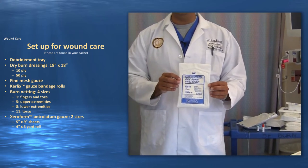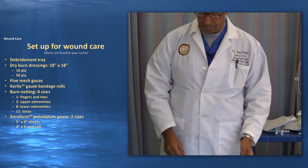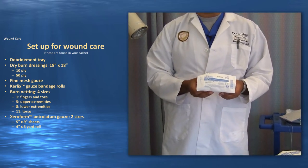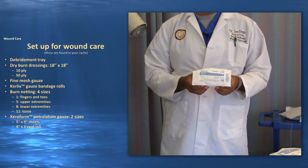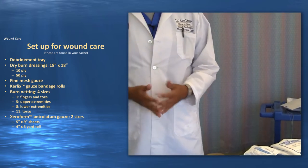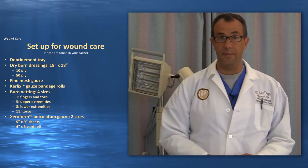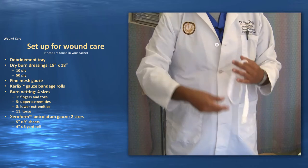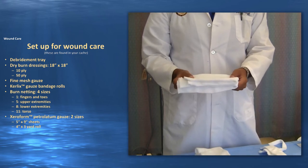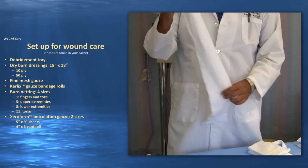Next we have fine mesh gauze, which will probably be used more after debridement if your burn patient stays with you. Then Curlex — you'll find a large amount of Curlex in your cache to help wrap all your wounds. These will be used on the head, bilateral upper extremities, and bilateral lower extremities. For burn netting, you'll have four different sizes: size 1 for fingers, size 5 for upper extremities, size 8 for lower extremities, and size 11 which will be cut in half and opened up for use on the torso.